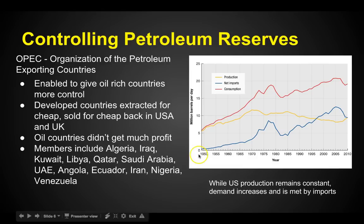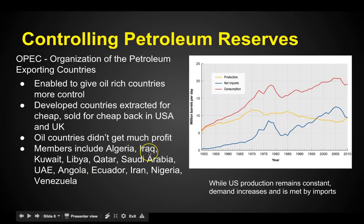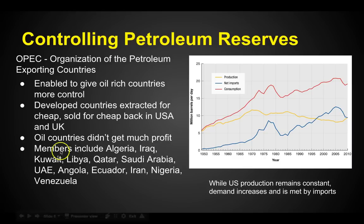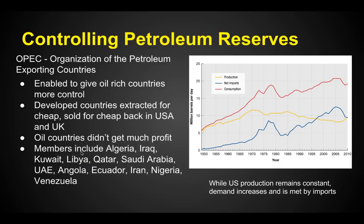While U.S. production remains constant, demand is increasing and it's met by imports. So the U.S. imports a whole bunch of its oil and has to deal with OPEC. This is concerning because we want to make sure these countries are getting us oil at a rate that's feasible for consumers. If all OPEC members got together and charged a whole lot more for oil, it would slow down transportation and increase the cost of lots of goods and services.